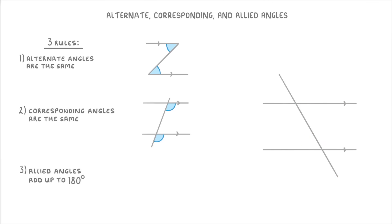The third rule is that allied angles add up to 180 degrees. And allied angles are just the interior angles of a C shape. So in this diagram, these two angles would add together to make 180 degrees. We also sometimes call these co-interior angles, or just interior angles. So just know that allied, co-interior, and interior all mean the same thing here.